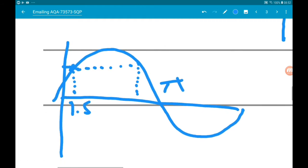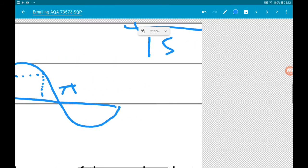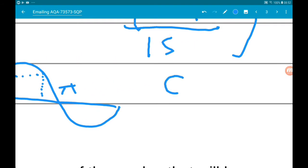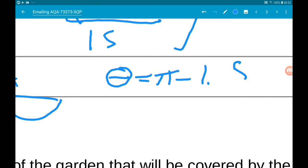So we want the second solution over here, which is pi minus 1.5. So theta, the value that we want is pi minus 1.5,